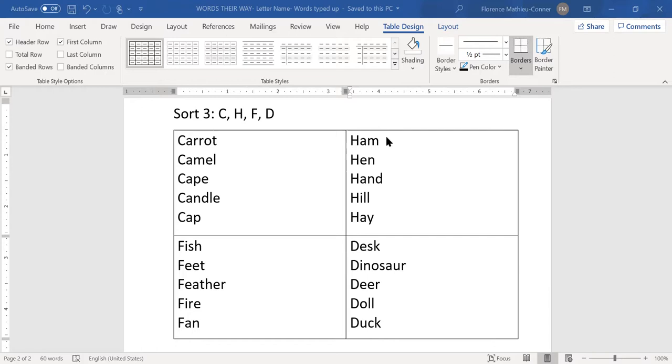In h, we have ham, hen, hand, hill, and hay.